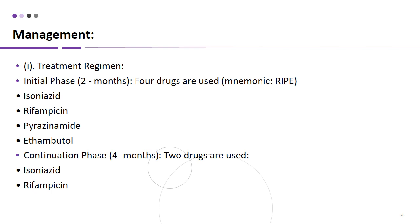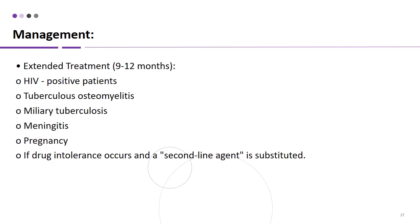Management includes an initial phase of two months followed by a continuation phase of four months. Four drugs are used in the initial phase: isoniazid, rifampicin, pyrazinamide, and ethambutol. In the continuation phase, only isoniazid and rifampicin are used. Extended treatment of 9–12 months is indicated in HIV-positive patients, tubercular osteomyelitis, biliary TB, meningitis (minimum 12 months), pregnancy (as pyrazinamide is contraindicated), and when drug intolerance requires substitution with a second-line agent.